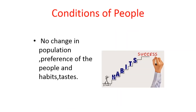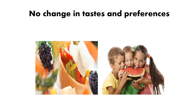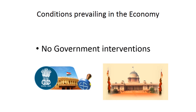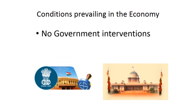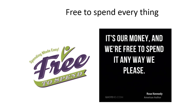There is no change in population, preference of the people, habits, and taste. If such changes occur, the law will not operate. The law operates in a rich capitalist economy where there is no government intervention. The law is inoperative in socialist countries.